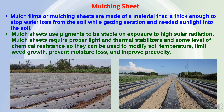Here we will study about mulching sheets. Mulch films or mulching sheets are made of a material that is thick enough to stop water loss from the soil while allowing proper aeration and needed sunlight into the soil. Mulch sheets use pigments to be stable on exposure to high solar radiation. Mulch sheets require proper light and thermal stabilizers and some level of chemical resistance so that they can be used to modify soil temperature, limit weed growth, prevent soil moisture loss, and improve precocity — meaning early development of the crop.